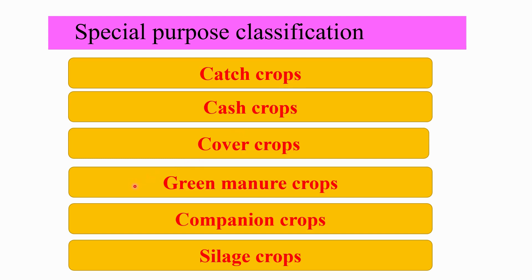Green manure crops are turned under while still green to improve soil properties and increase organic matter content — cowpea is an example. Companion crops are crops that are intercropped with one another and each crop can be harvested separately. Silage crops are preserved in a succulent manner and are prevented from fermentation in a tight receptacle; examples include corn, sorghum, and forage grasses and legumes.